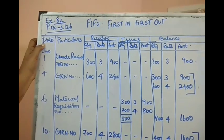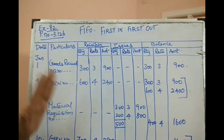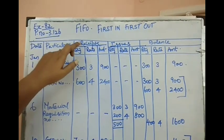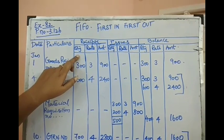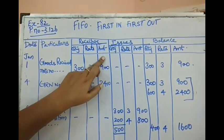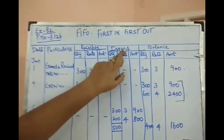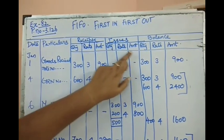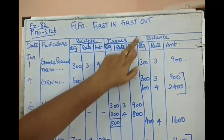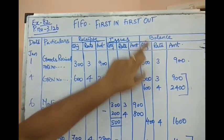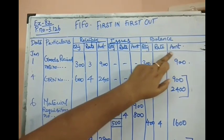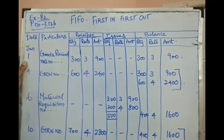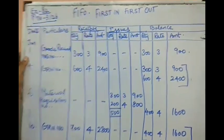Now we will see the problem using the FIFO method. The stores ledger columns are: Date, Particulars, then Receipts — consisting of Quantity in units, Rate per unit, Amount in rupees — then Issues — Quantity in units, Rate per unit, Amount in value — and finally the remaining Balance — Quantity in units, Rate per unit, Amount in value. The first transaction starts from January 1st.